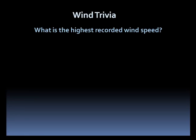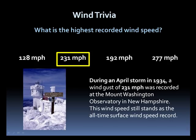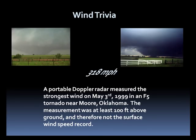How about a little wind trivia? What is the highest recorded surface wind speed — 128 mph, 231, 192, or 277? It's 231. In April of 1934, a wind gust of 231 mph was recorded at the Mount Washington Observatory in New Hampshire. Strong winds are common at Mount Washington — in a typical year, hurricane-force winds are experienced on almost one-third of the days. While Mount Washington holds the record for highest recorded wind speed at the surface, the highest measured wind speed was in a tornado. On May 3, 1999, a portable Doppler radar recorded a 318 mph wind within an F5 tornado near Moore, Oklahoma. However, this measurement was at least 100 feet off the surface and therefore is not the official land wind speed record.